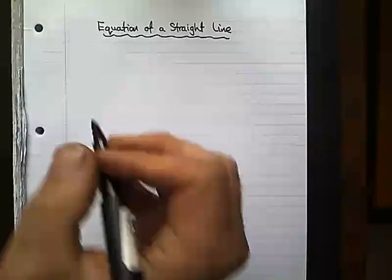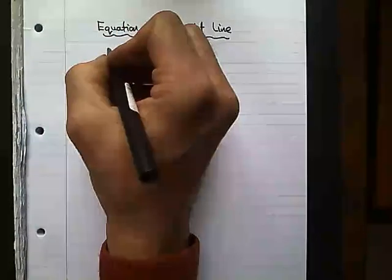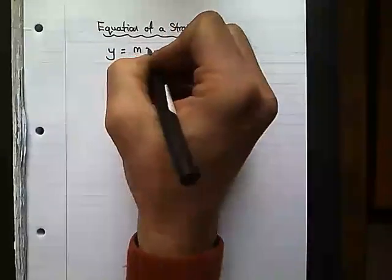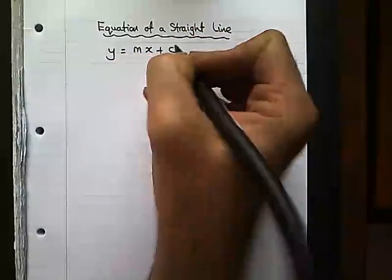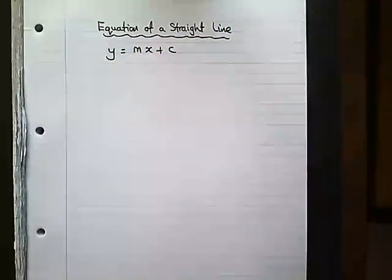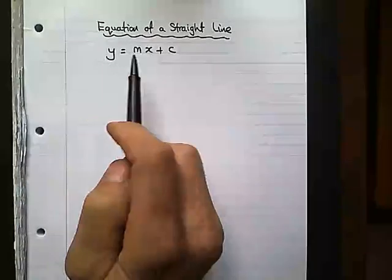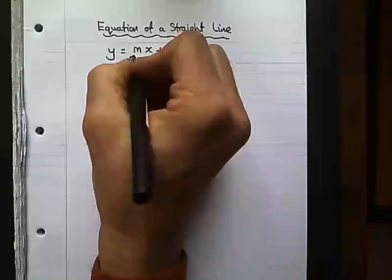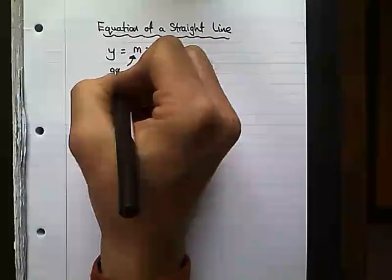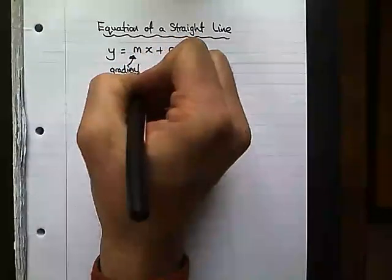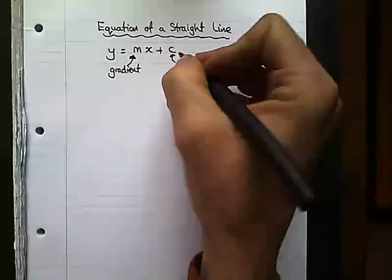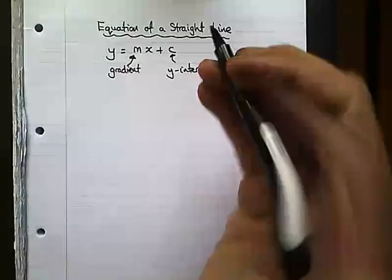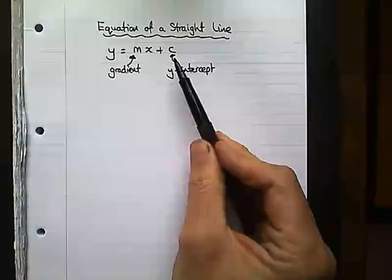If you remember the last lesson, the general form for an equation of a line is y equals mx plus c. y is the y-coordinate, x is the x-coordinate, m is the gradient and c is the y-intercept or the value of the y-coordinate when it crosses the y-axis.